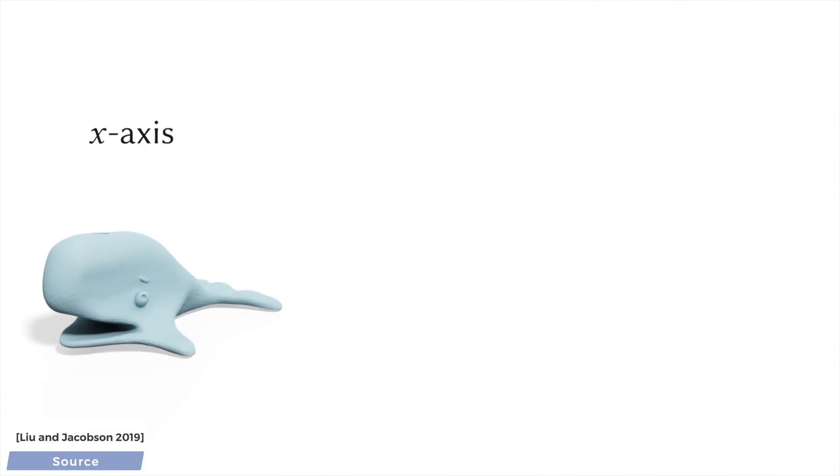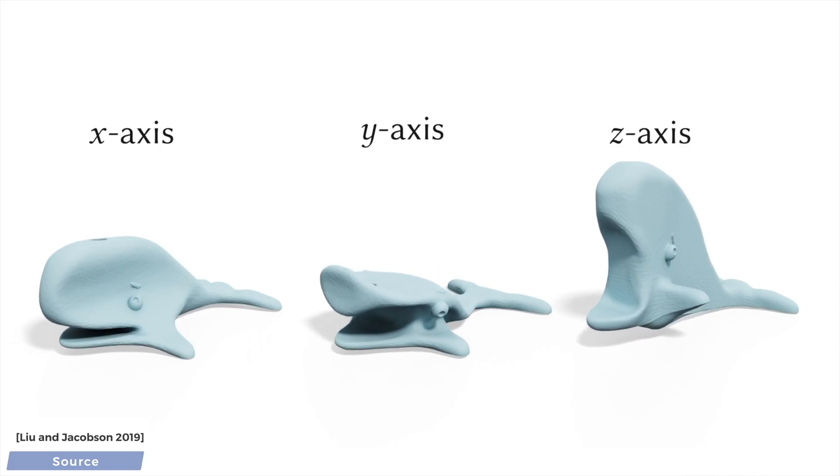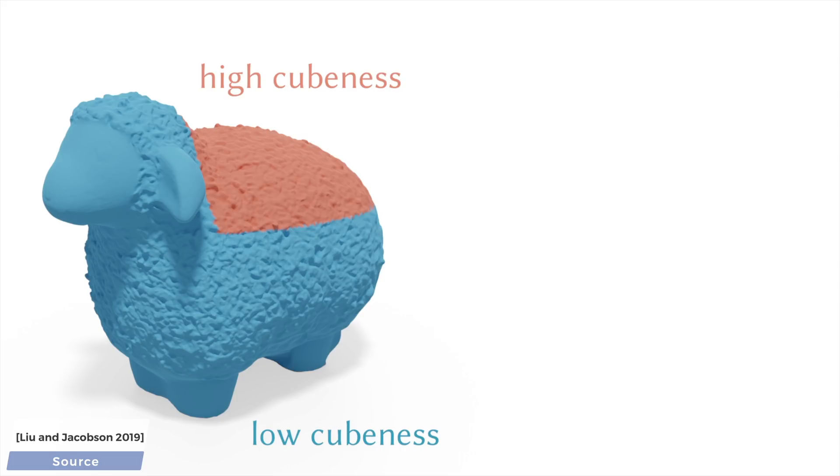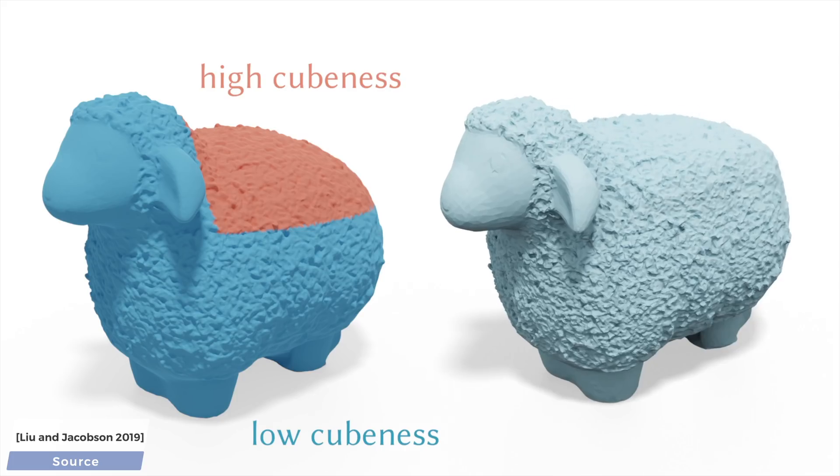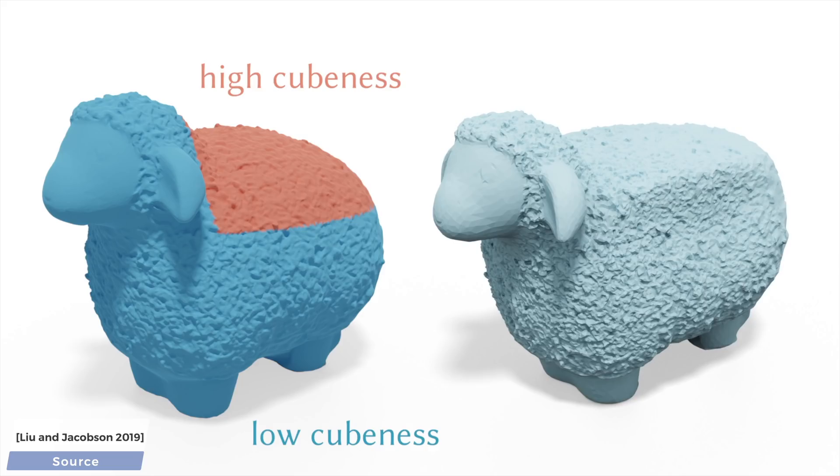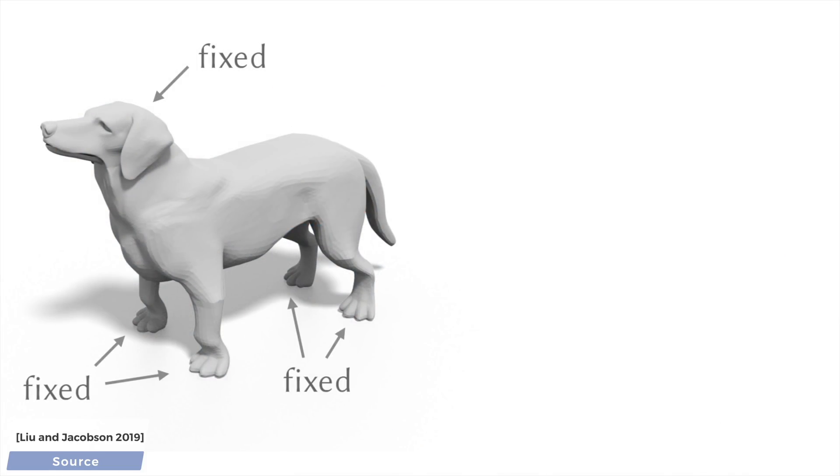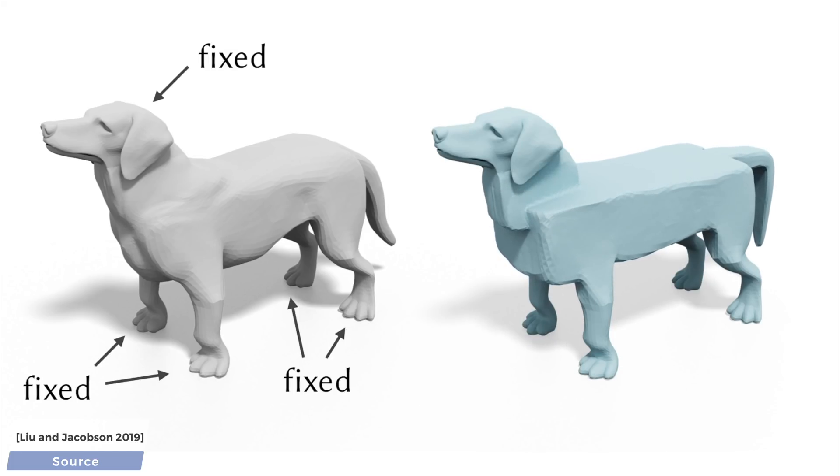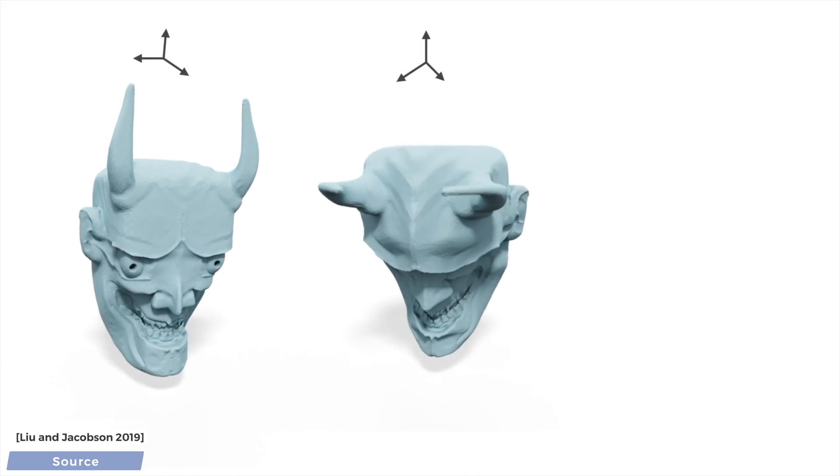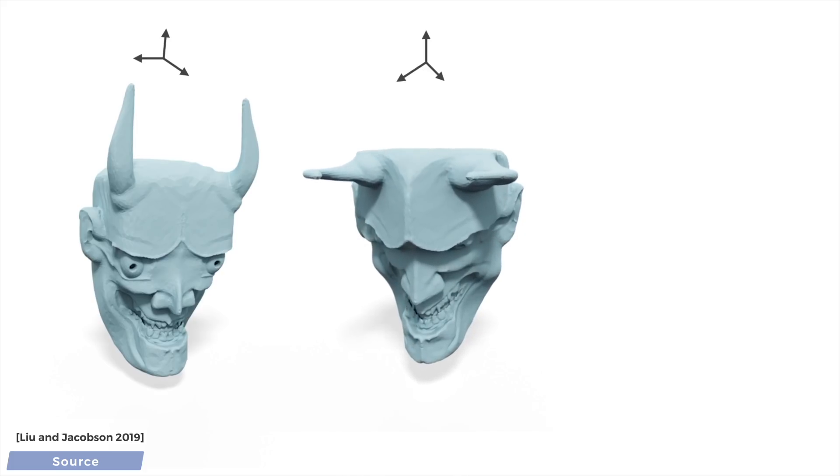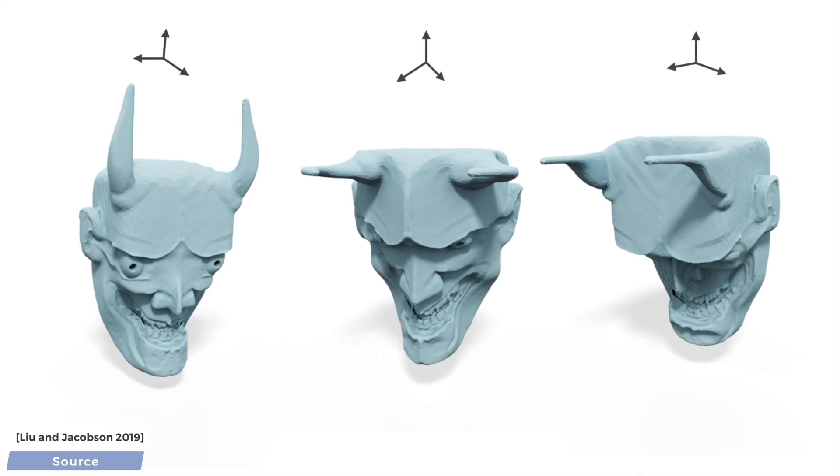Two, we can also cubify selectively along different directions, or select parts of the object that should be cubified differently. Three, we can even use it to fix flaws in the input 3D geometry. Four, this transformation procedure also takes into consideration the orientations. This means that we can perform it from different angles, which gives us a large selection of possible outputs for the same model.